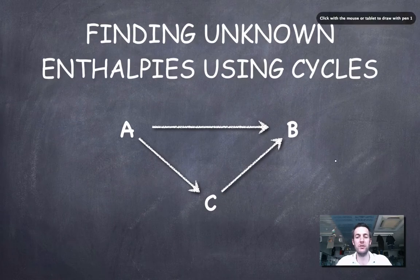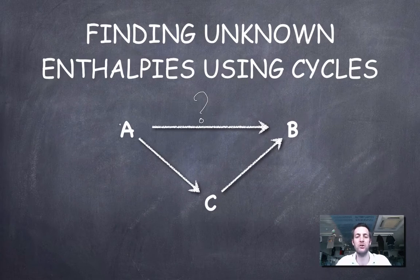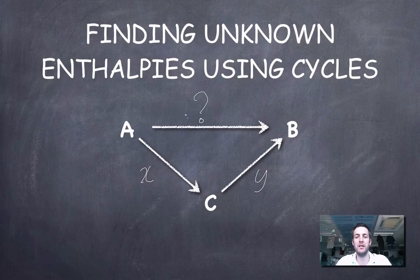Now let's look at how we can use this law to calculate an enthalpy change using Hess's law cycles. I want to know the enthalpy change when going from A to B, but I can't do this reaction directly. If I know the enthalpy change going from A to C, and from C to B, then I can use Hess's law to say that the enthalpy change from A to B equals X plus Y.